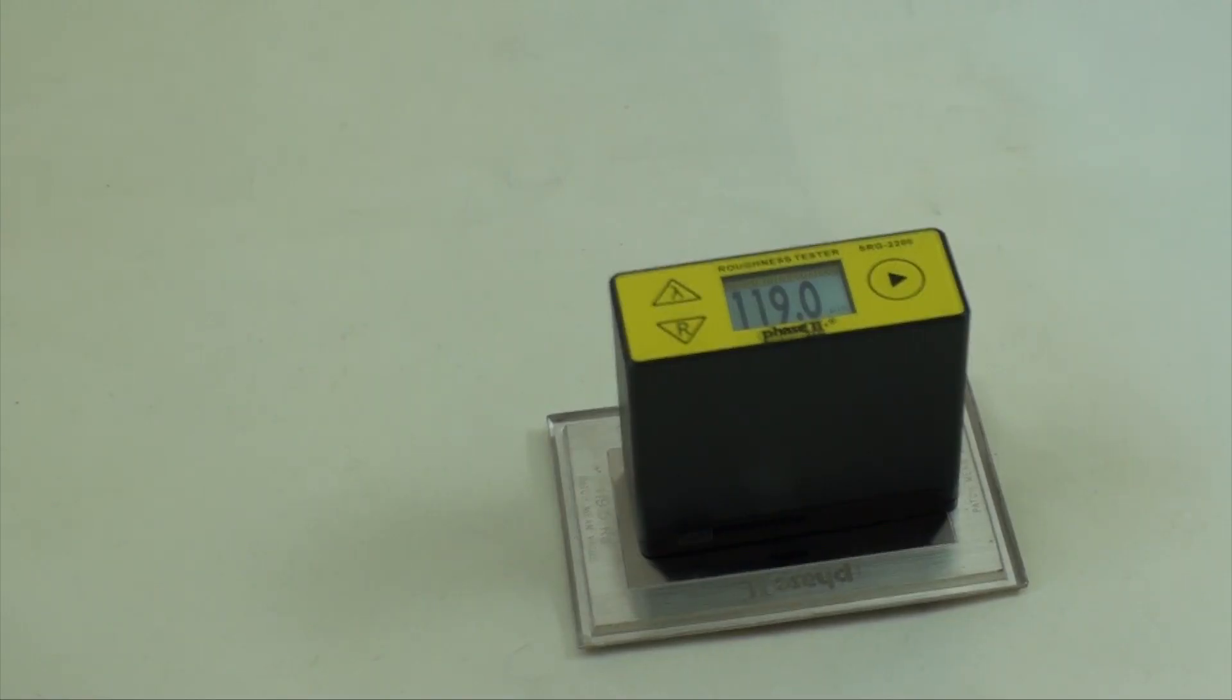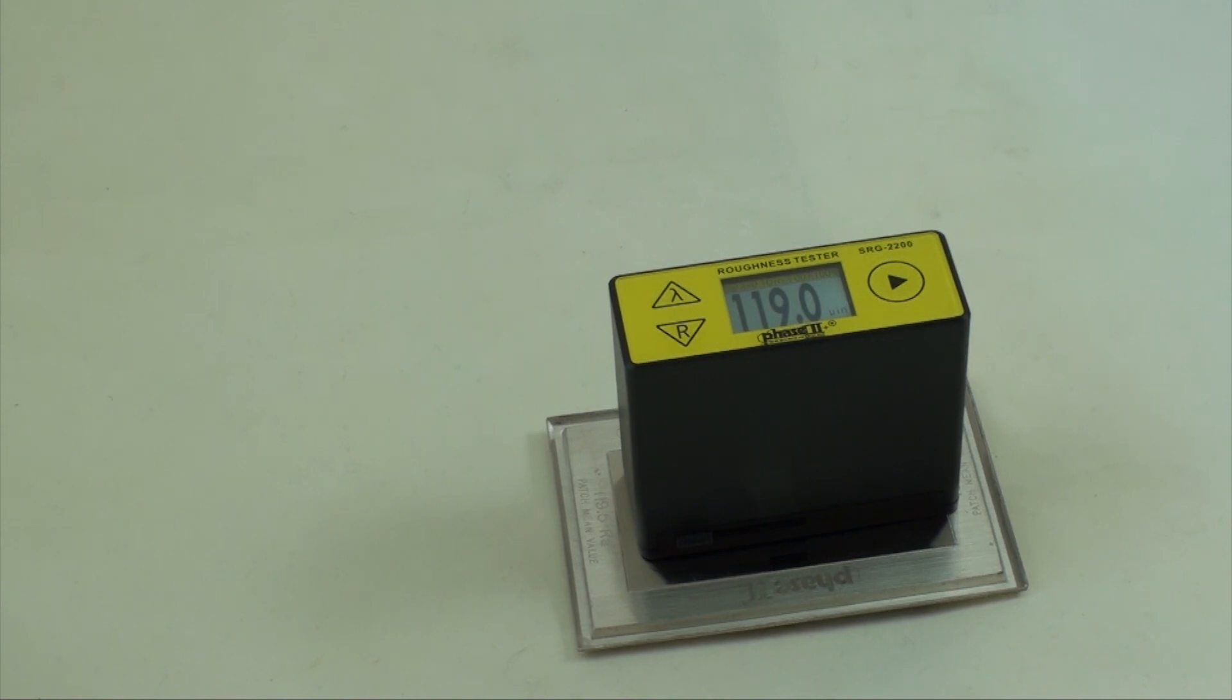This is an instructional video detailing the applications and functions of the Phase 2 SRG2200 Surface Roughness Tester. The SRG2200 is an instrument designed to check surface finish with measured values displayed on a digital readout in various surface roughness parameters.